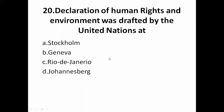The Declaration of Human Rights and Environment was drafted by the United Nations at: A — Stockholm, B — Geneva, C — Rio de Janeiro, D — Johannesburg. The correct answer is B — Geneva.